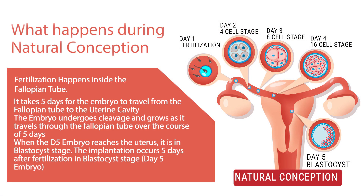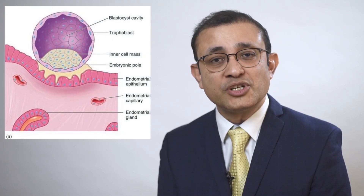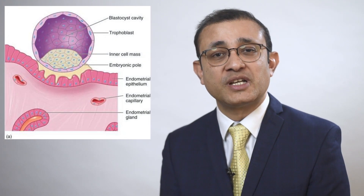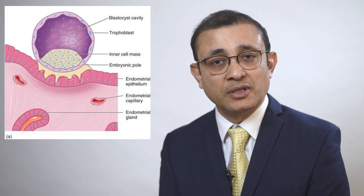In the human body, an embryo is formed inside the fallopian tube when the egg or oocyte is fertilized by the sperm. This resulting embryo travels through the fallopian tube for four days, and on the fifth day it comes inside the uterus or the womb. At this point, the outer shell called the zona pellucida breaks down and the embryo attaches to the wall of the womb and grows there.